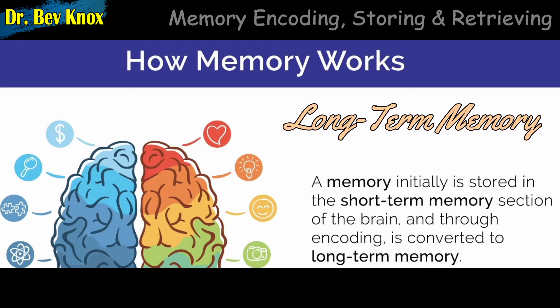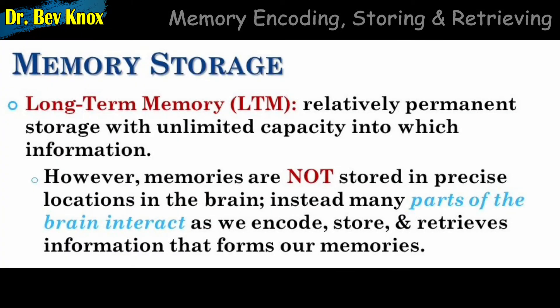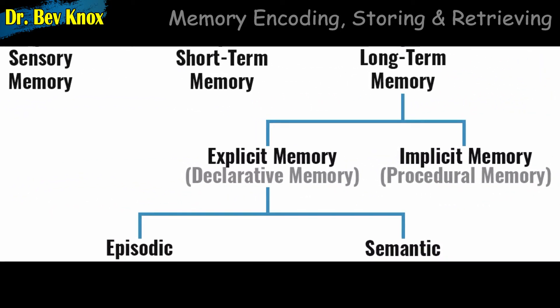Now let us review long-term memory. Material that makes its way from short-term memory to long-term memory enters a storehouse of almost unlimited capacity. Like a new file saved on a hard drive, the information in long-term memory is filed and coded so that we can retrieve it when we need it. Just as short-term memory is often conceptualized in terms of working memory, many contemporary researchers now regard long-term memory as having several different components or memory modules, each representing a separate memory system in the brain.